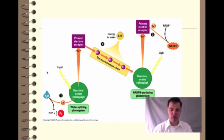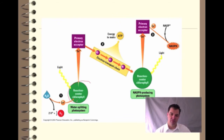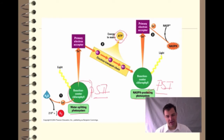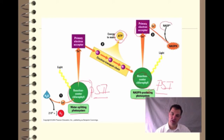So plants use up water, as you probably know. The reason plants need water is, in part at least, to drive photosynthesis during the light reactions. One of the things plants give off in photosynthesis during the light reactions is oxygen. Here's another picture showing photosystem II — also called the water-splitting photosystem — and photosystem I, also called the NADPH-producing photosystem. Light hits the primary electron acceptor, we transfer the electron energy, and as we do that we make a little bit of ATP.